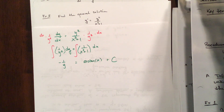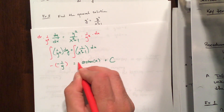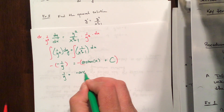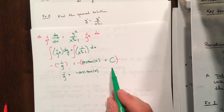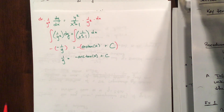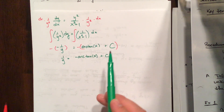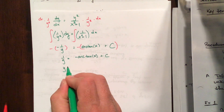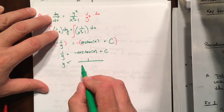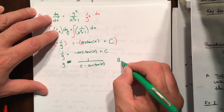We can't play fast and loose with the negative, so multiply both sides by negative one. We get 1 over y equals negative arctan of x minus c. But minus a constant is still a constant, so we just call it c. Then invert both sides: y equals 1 over c minus arctan of x. That's the general solution.